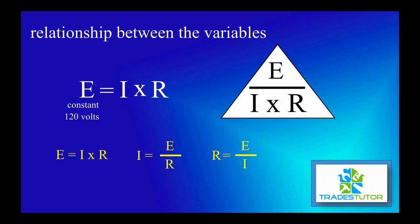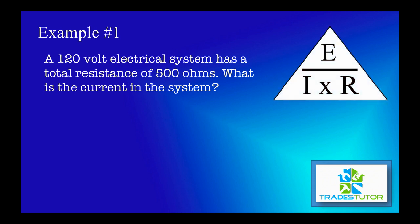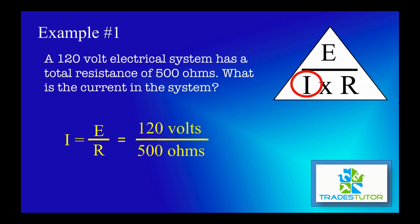Easiest way here, let's just go through a couple of quick examples. So, 120 volt electrical system has a total resistance of 500 ohms. What is the current in the system? Put down our triangle. Solve for I. Put the formula down. Plug the variables in. Okay, we have a 120 volt system and 500 ohms of resistance. And we get 0.24 amps.